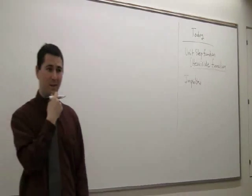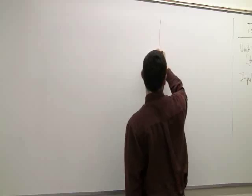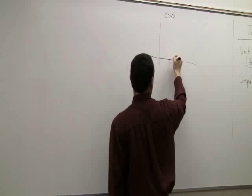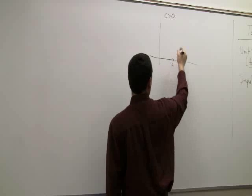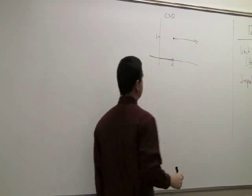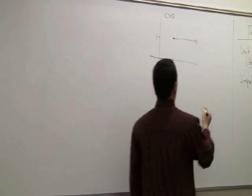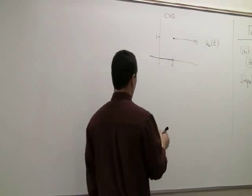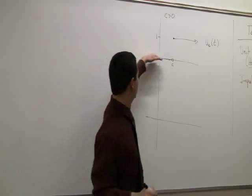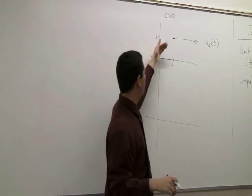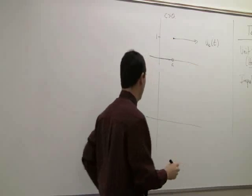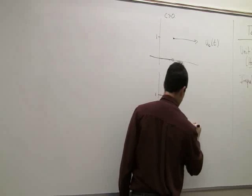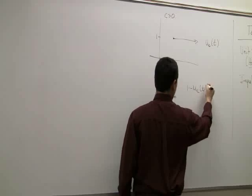Yesterday we finished the lecture with a little puzzle. We defined a function for some positive number C: it sits at zero until you get to C, and then at C it jumps up to one and stays at one forever. We called this function U_C of T. We also figured out that if you wanted the step function to go the other way — start up at one and then drop down to zero — you could just use one minus U_C of T.